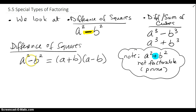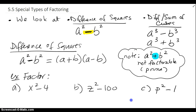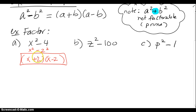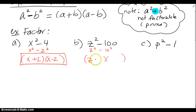Let's look at some quick examples. For x squared minus 4, I can think of this as x squared minus 2 squared. They're both perfect squares, so my answer will be x plus 2 times x minus 2. For z squared minus 100, I'm really looking at z squared minus 10 squared, so I get z plus 10 times z minus 10. The order doesn't matter — you could put the minus first or the plus first.